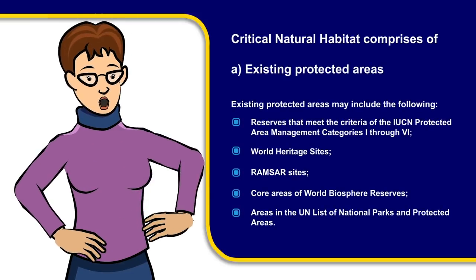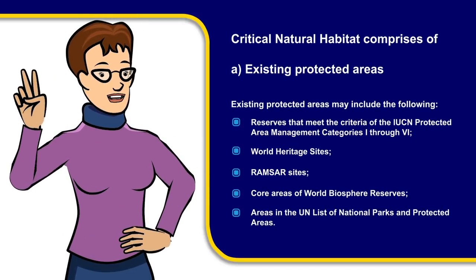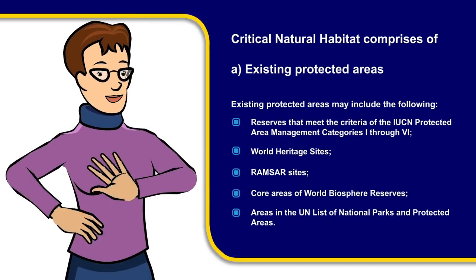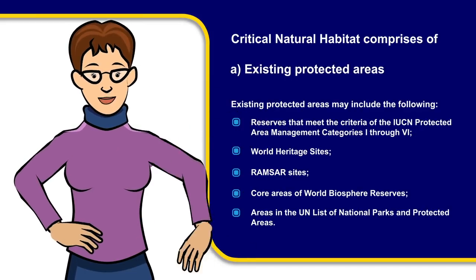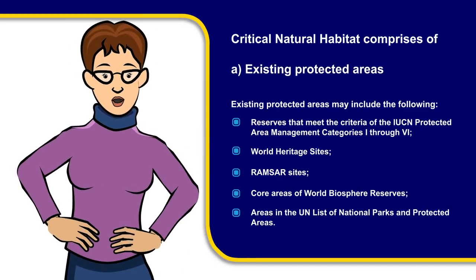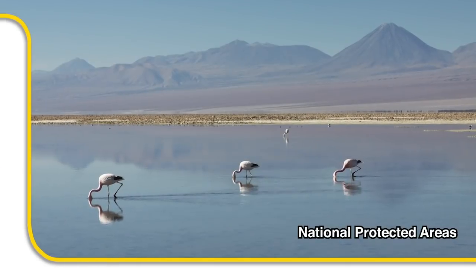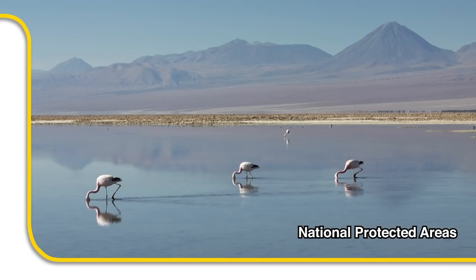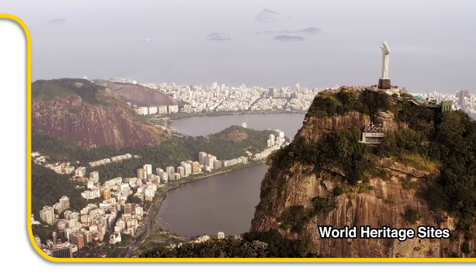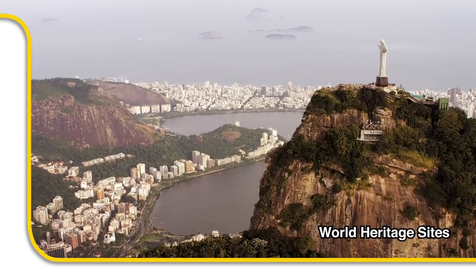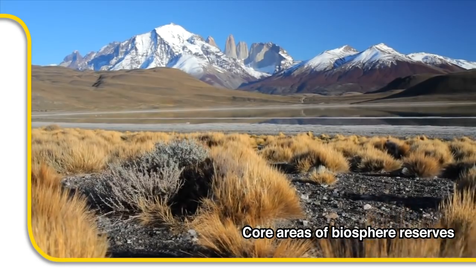The term critical natural habitat covers two types of area. First, it applies to existing and proposed protected areas. This covers national protected areas, Ramsar sites, World Heritage sites, and core areas of biosphere reserves.